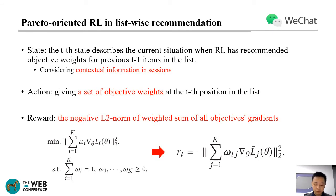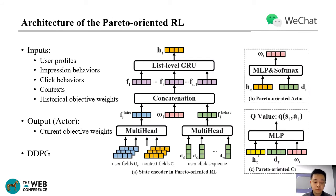We build an RL framework to consider the contextual information in recommendation sessions and lists. The state describes the current situation when an RL agent has recommended objective weights for previous items in the list. An action is giving a set of objective weights at the T-th position in the list. The reward is the negative L2 norm of the weighted sum of all objective gradients — a higher reward indicates that the overall item list is more closely approaching Pareto optimization. We use DDPG to train this RL model.